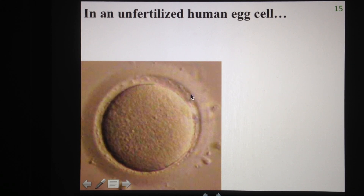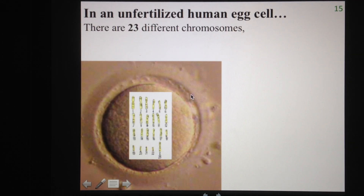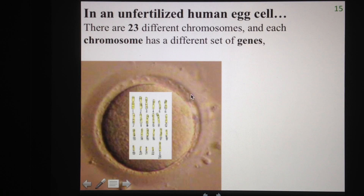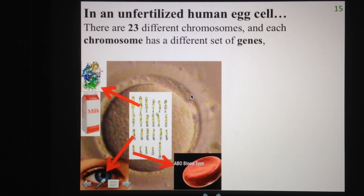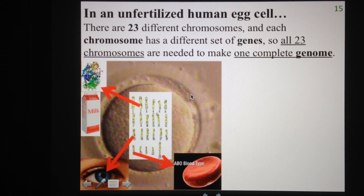Let's look at an entire cell and the DNA found in it, starting with a simpler cell: an unfertilized human egg cell. In an unfertilized human egg cell, there are only 23 chromosomes, and all of those are different. Each of these 23 chromosomes actually contains a different set of genes. For example, chromosome 2 is where you'll find the lactase gene; chromosome 15 has the gene for blue or brown eye color; chromosome 19 has the gene for determining blood type A, B, AB, or O. Since there are different genes on each of these 23 chromosomes, you need all 23 of them to make one complete genome.